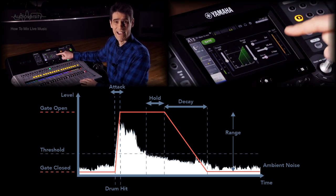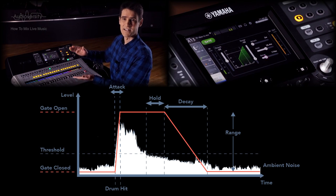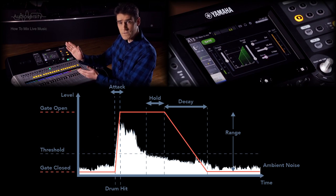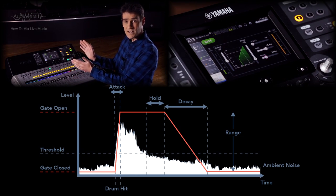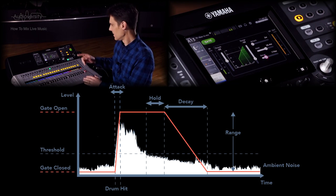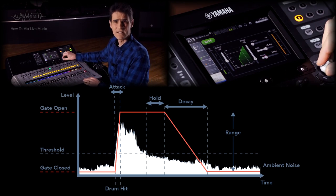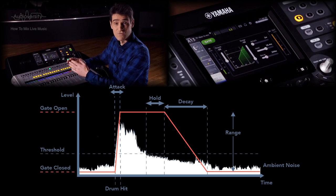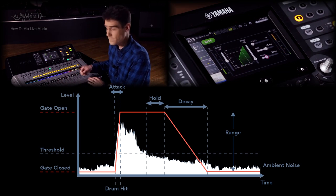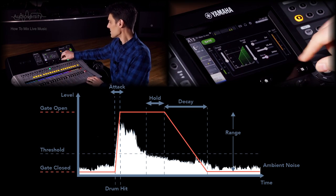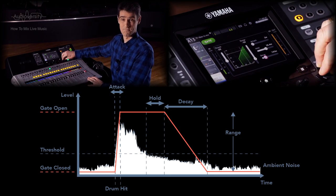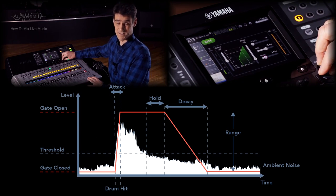Lastly, the decay determines how long it takes the gate to close after the hold time is completed and the input goes quiet. With the decay, we can control how much ringing is let through after the drum is hit. Somewhere between 100 and 200 ms is a good place to start.